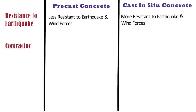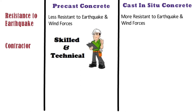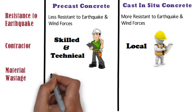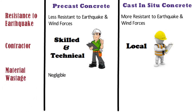To construct a precast concrete structure, one needs a skilled and technical contractor. Whereas a cast in situ concrete structure can be built by local contractors also. In precast concrete construction, wastage of materials is negligible as compared to cast in place concrete. Whereas in case of cast in situ concrete method, the wastage is more.